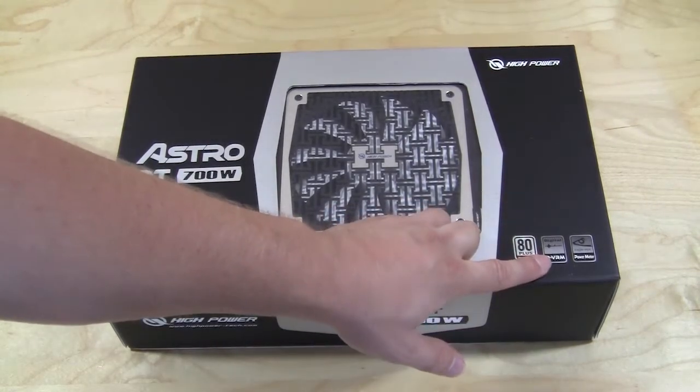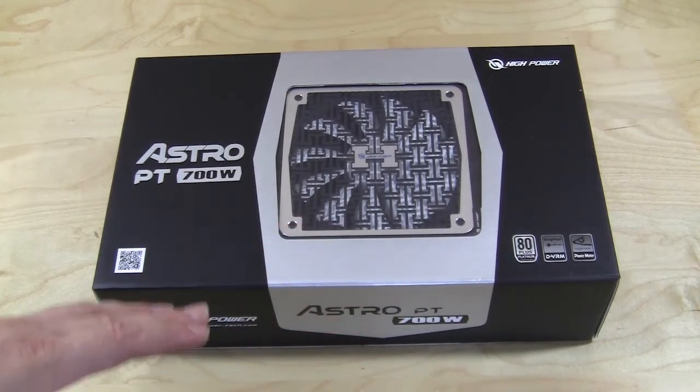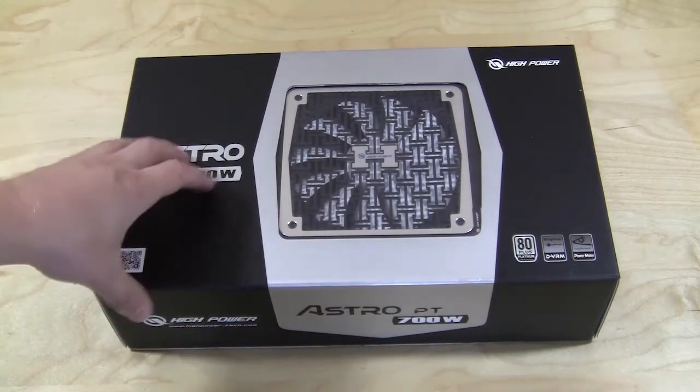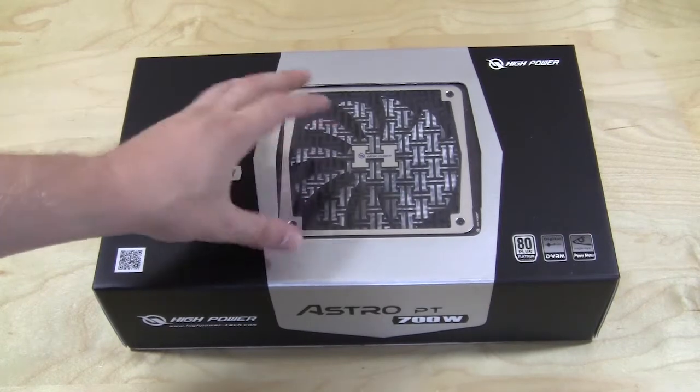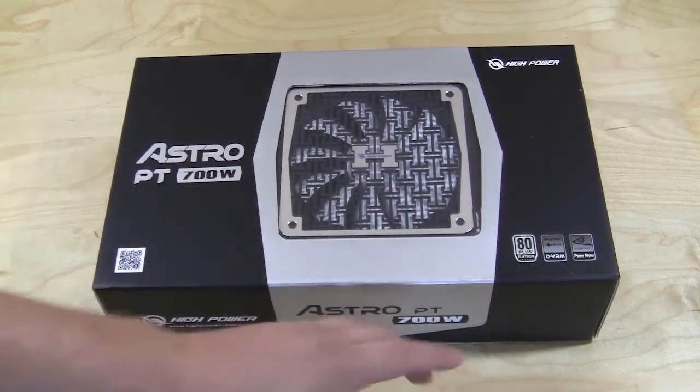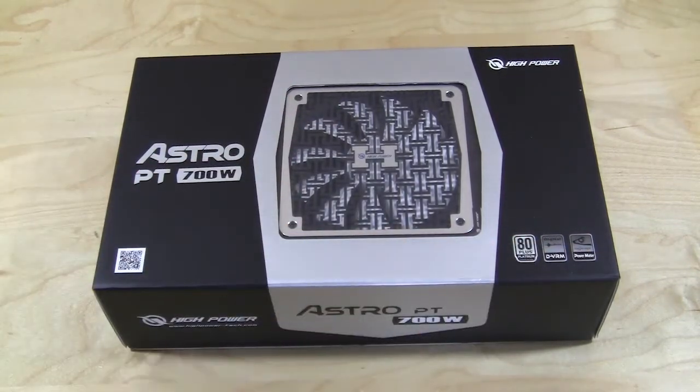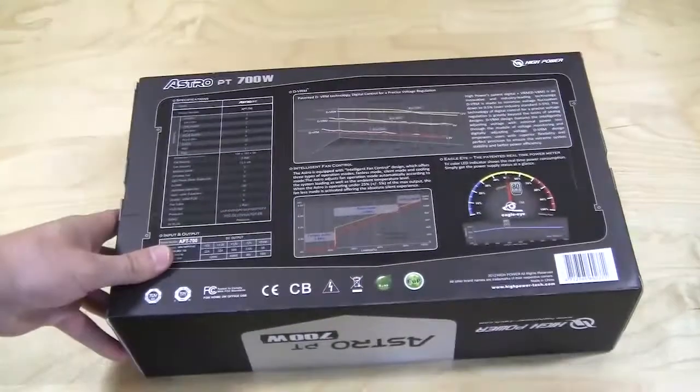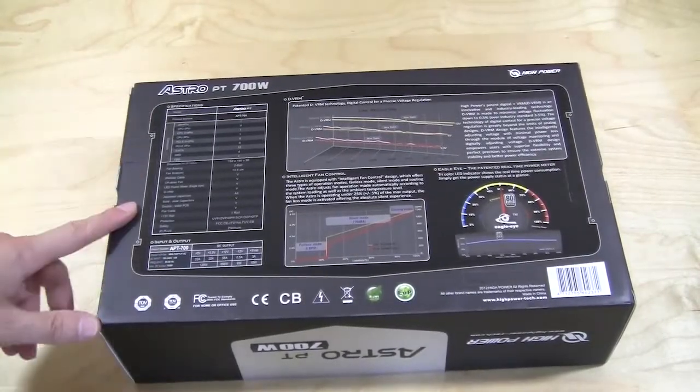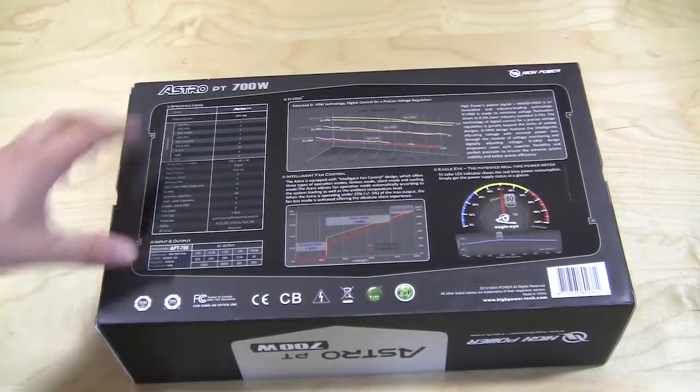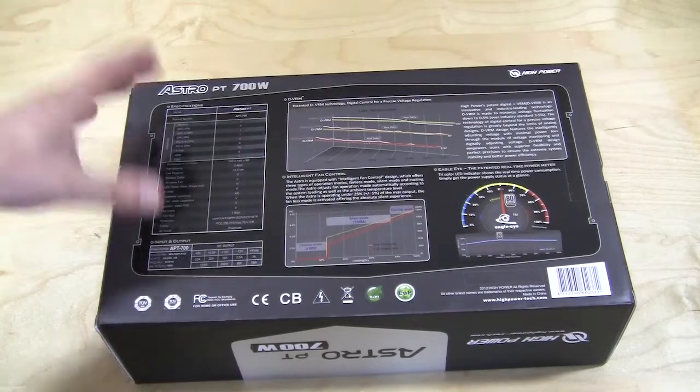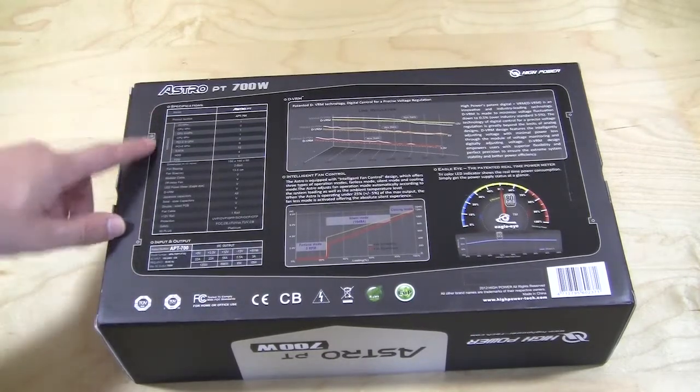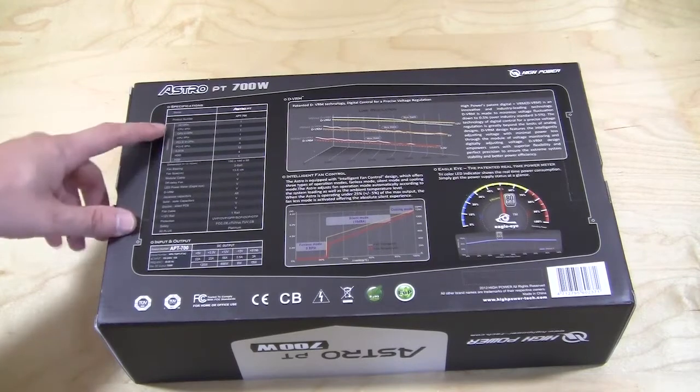Digital VRM - we've seen this a lot on motherboards. They're using a digital power design. This power supply is using a digital power design as well, and it says their Eagle Eye power meter which we're actually going to get into in the actual review. If we flip it over here, they do list all of their specifications nicely and their input and output graph. Easy to see so when you are buying this, you know exactly what you're going to get, and it lists all of the connectors, so that's nice.